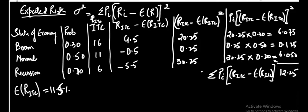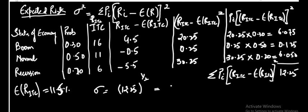This value of 12.25 is the variance of the returns on ITC Limited. To get the standard deviation, I simply take the square root: the square root of 12.25 gives a standard deviation of 3.5 percent. So the total risk for ITC Limited is 3.5 percent. You can calculate the risk for Wipro in a similar manner as a practice exercise.